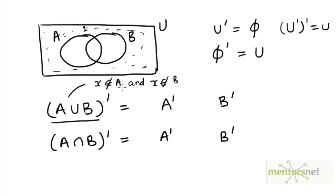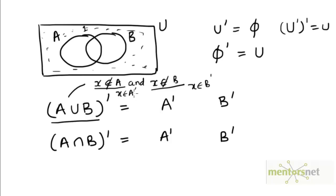X does not belong to A and X also does not belong to B. If X does not belong to A, then X must be an element of A complement. Likewise, if X does not belong to B, then X must be an element of B complement. So X must be an element of both A complement and B complement, which means that X must lie in the intersection of A complement and B complement. So A union B complement is A complement intersection B complement.